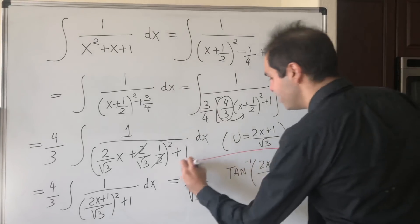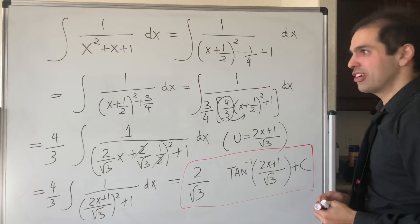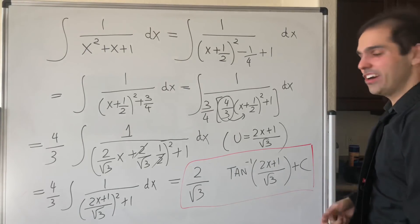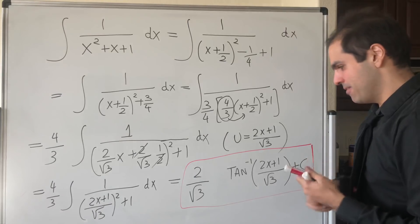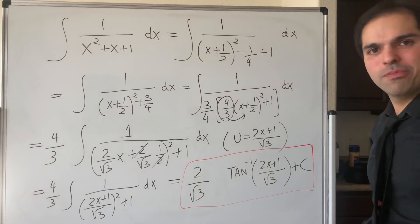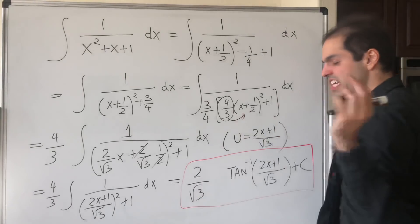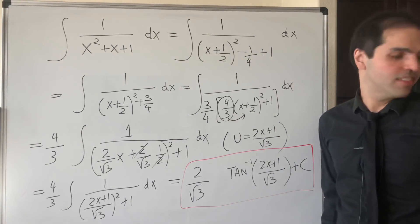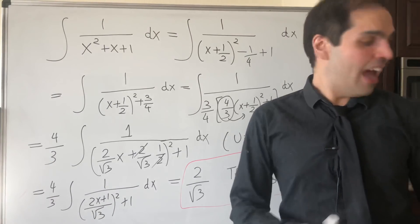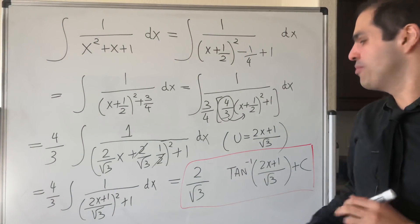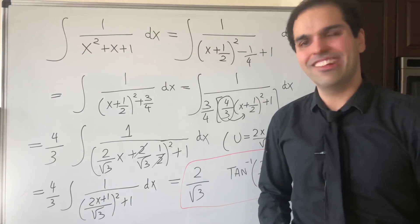Isn't it surprising? For the cubic case we had a bunch of logarithms and arctangents, but here for the quadratic case we get a weird arctangent with square roots. I hope you liked this — if you want to see more math, please make sure to subscribe to my channel. Thank you very much!